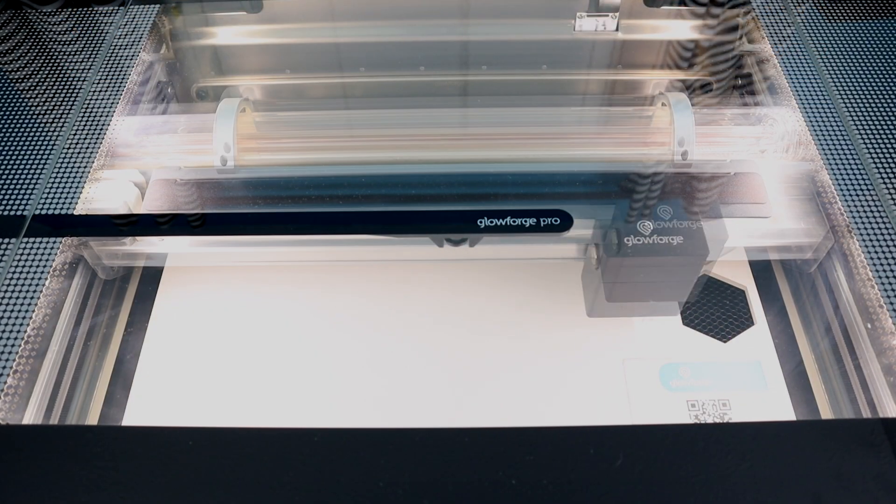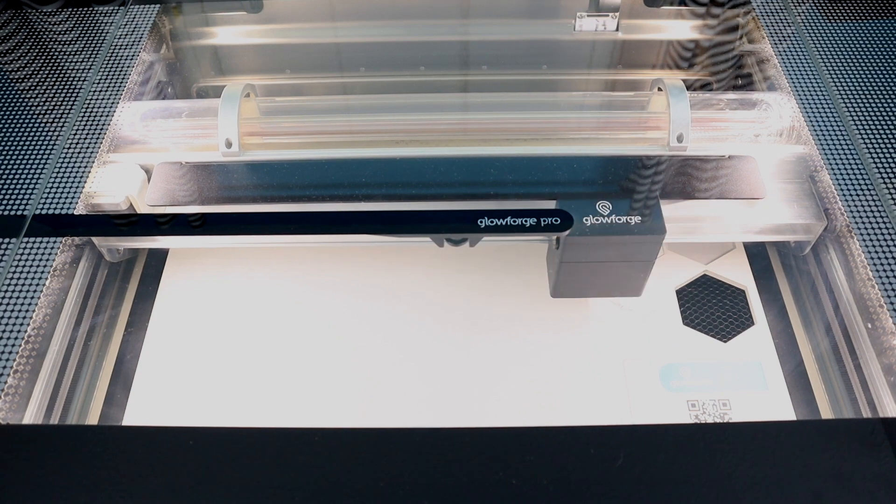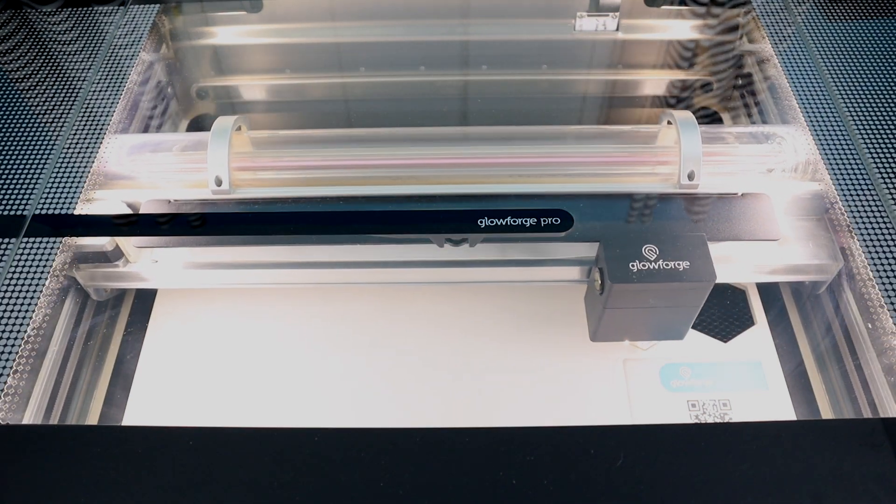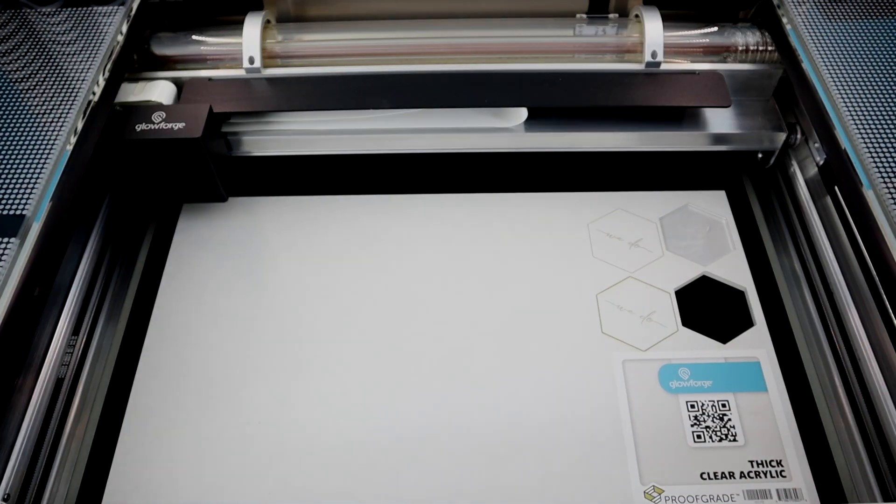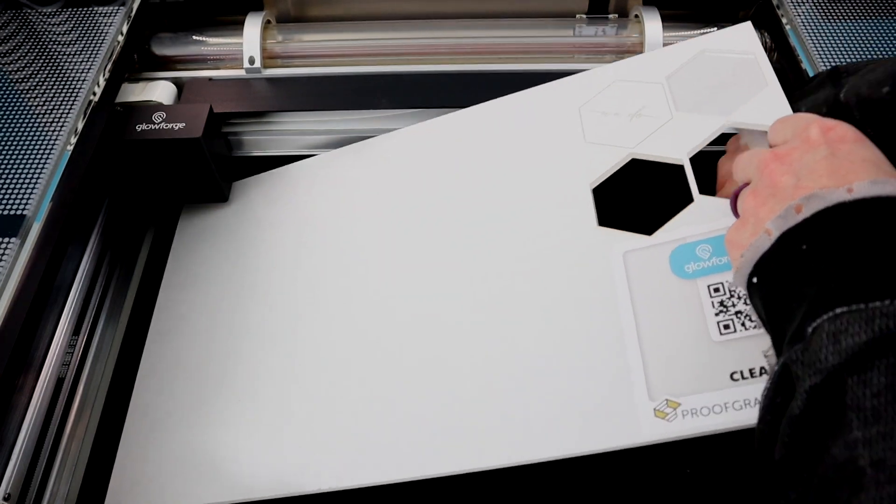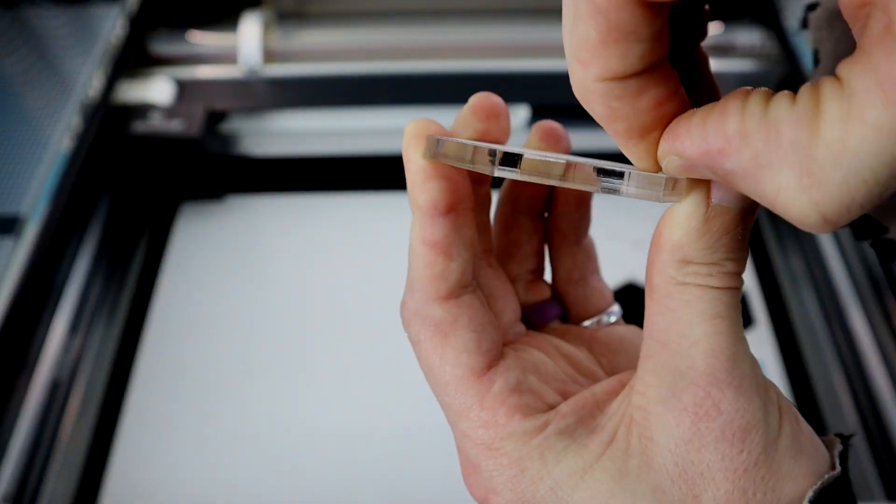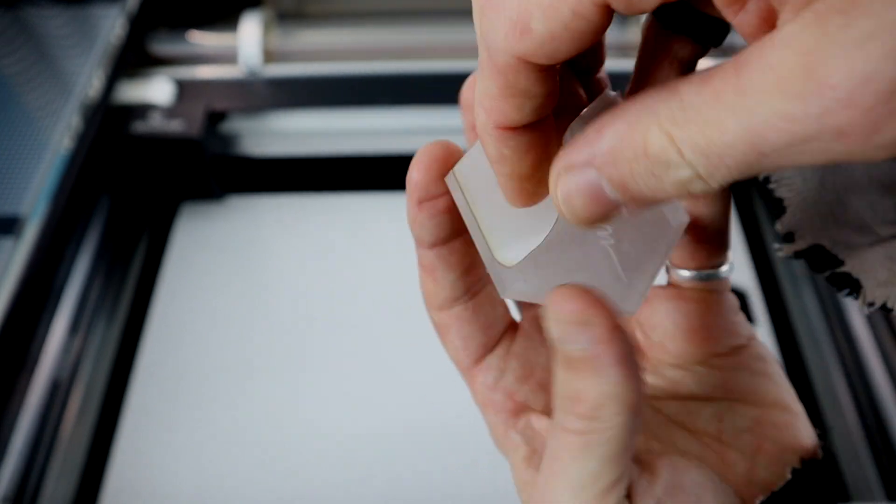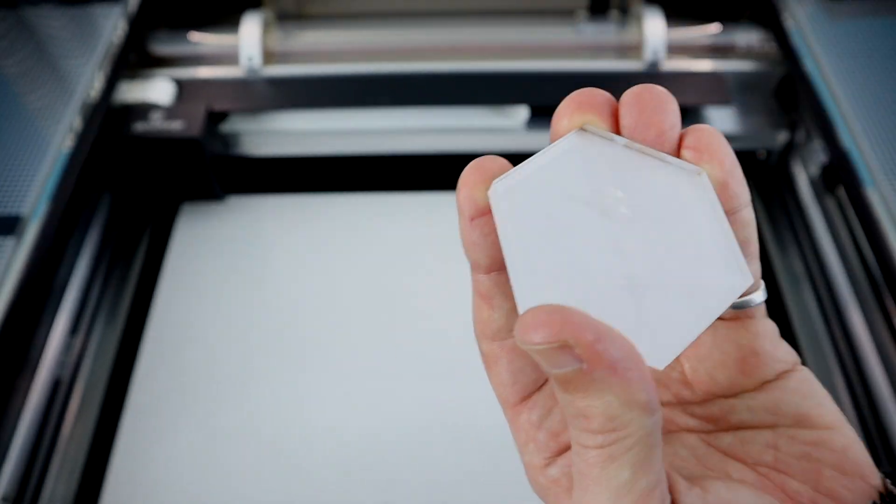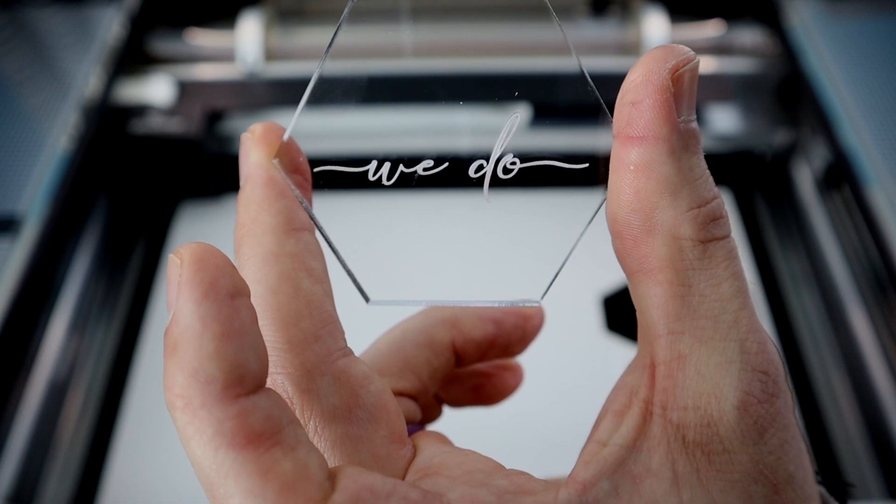But again, we're going to speed this up for you. Nobody wants to sit there and watch that, though they are quite cool. So of course, this does come pre-masked. And so we just need to peel off the masking from the outside and pick it out of the little insides of the letters. And that is how it turned out.